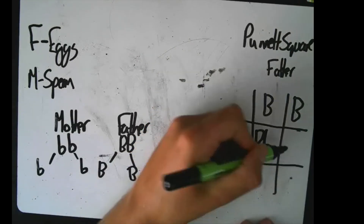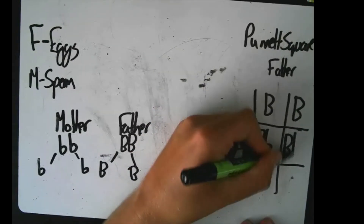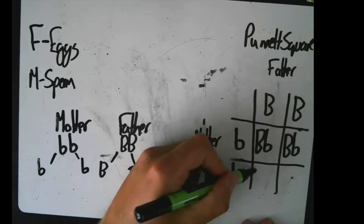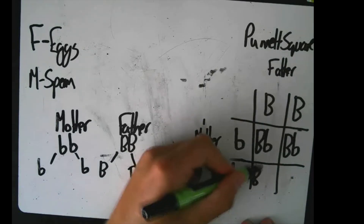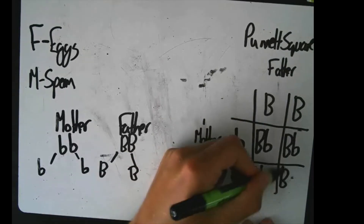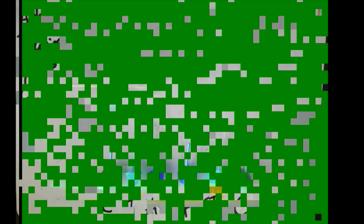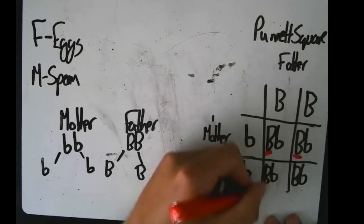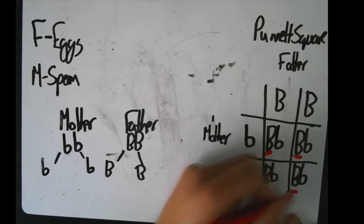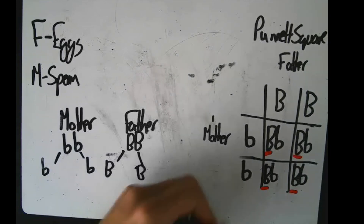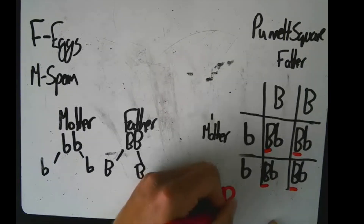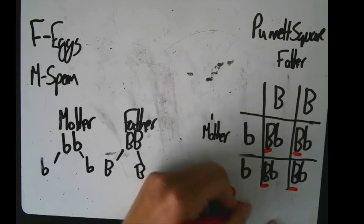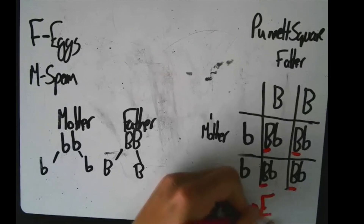We put the values together in the table: capital B lowercase b, capital B lowercase b, capital B lowercase b, and capital B lowercase b. In this example each one of the offspring has a capital B, meaning they've got the dominant allele for a characteristic. So in this case all of the offspring are going to have brown eyes.